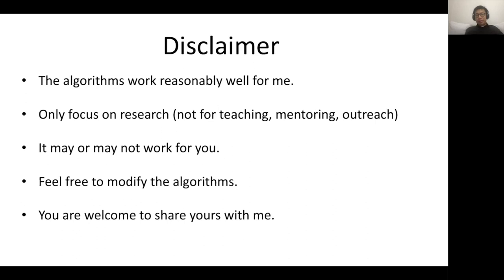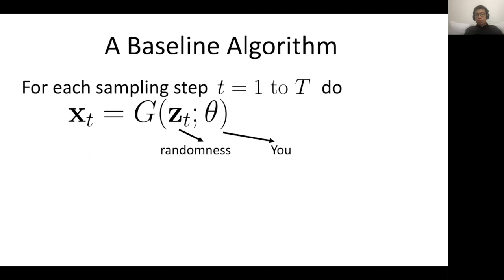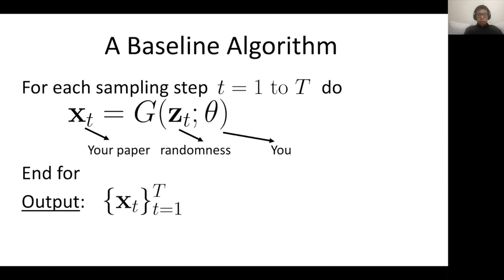Let's start with a baseline algorithm. We have T steps — we sample capital T steps. Each step, there's some randomness, and we have you as a researcher. The purpose is we have a paper generator, also known as an author, which writes a paper. This randomness contains things like a different research topic, whether you're lucky or unlucky in the review process, or whether your experiments are lucky or unlucky. The output of this algorithm is a collection of papers.